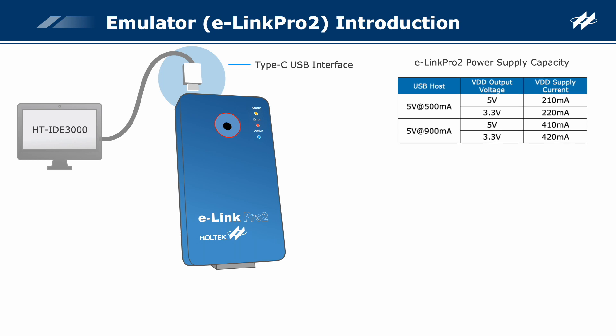According to the actual power supply capacity of the USB port (see the table), the E-Link Pro 2 can only output a maximum current of about 400 mA. If the application needs greater current, an external power supply is required. The E-Link Pro 2 provides a simple LED display interface for status, error, and active indicators respectively. When in use, the connection status with PC, emulation status, and emulation/programming results can be observed via the LED.